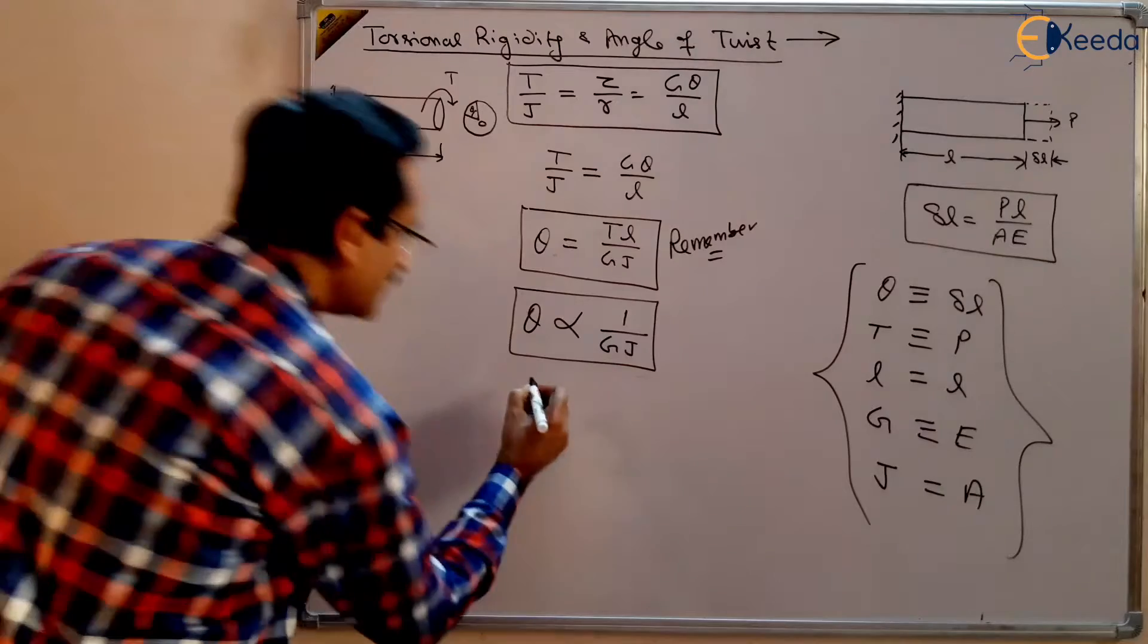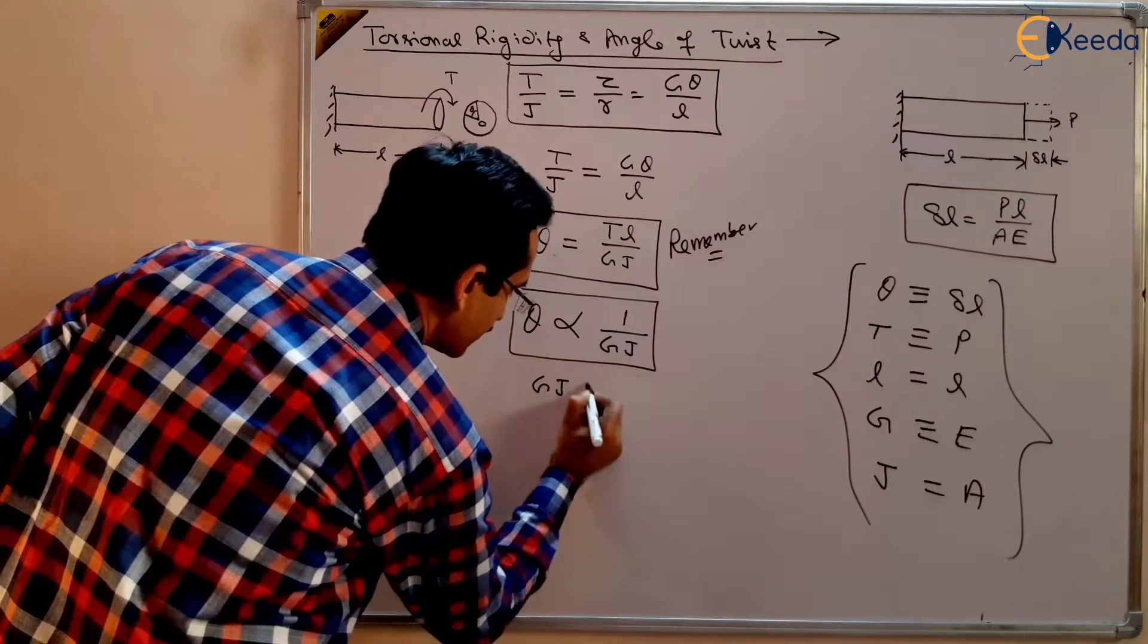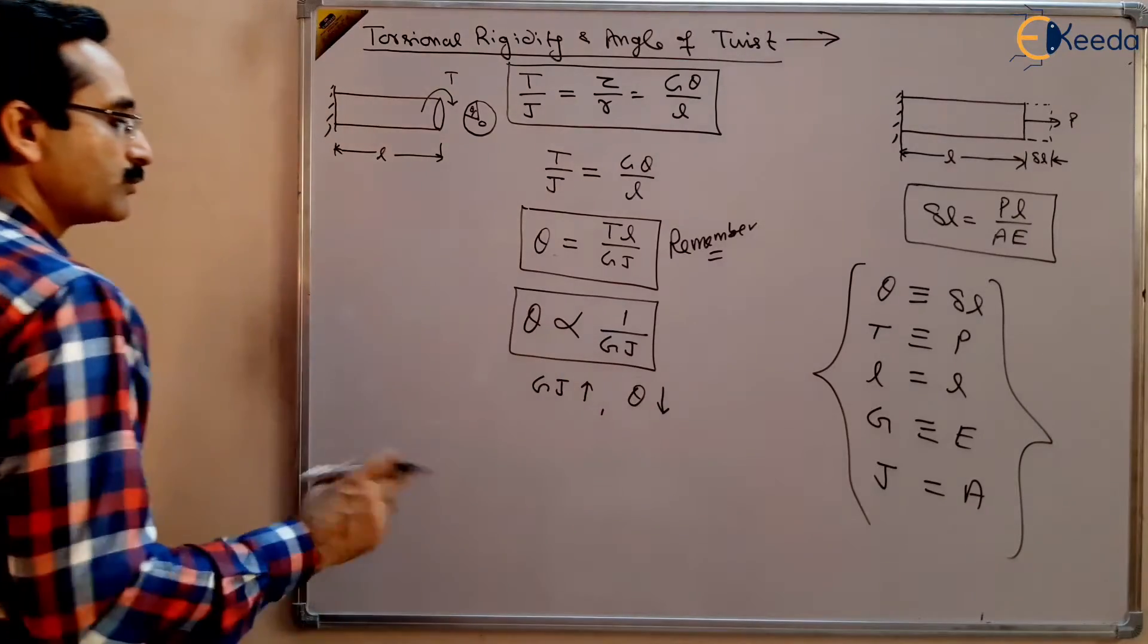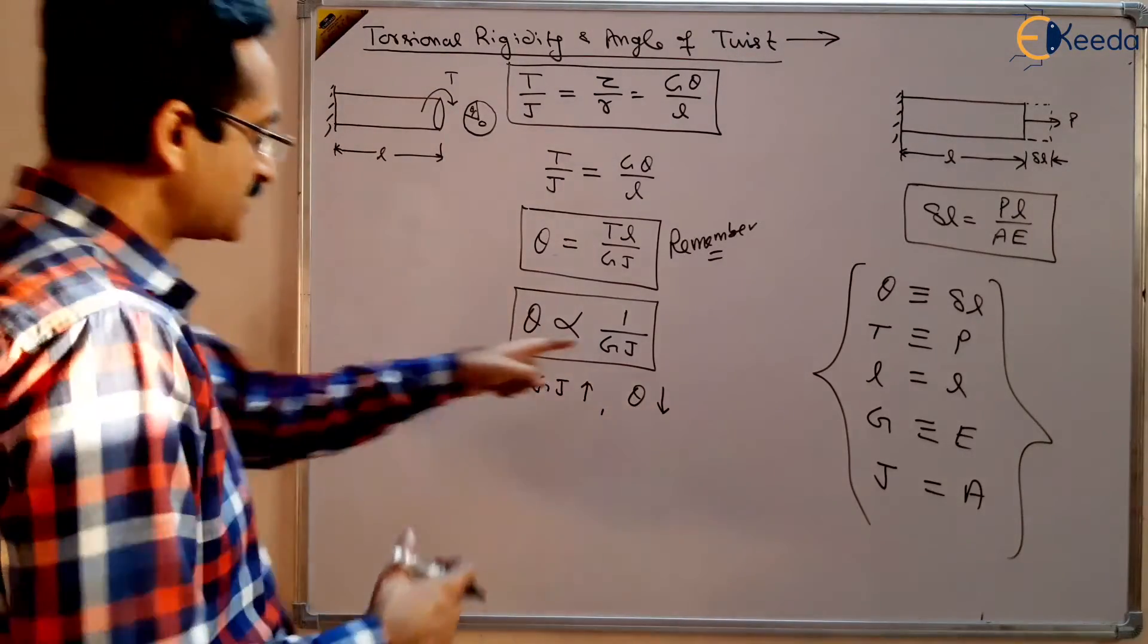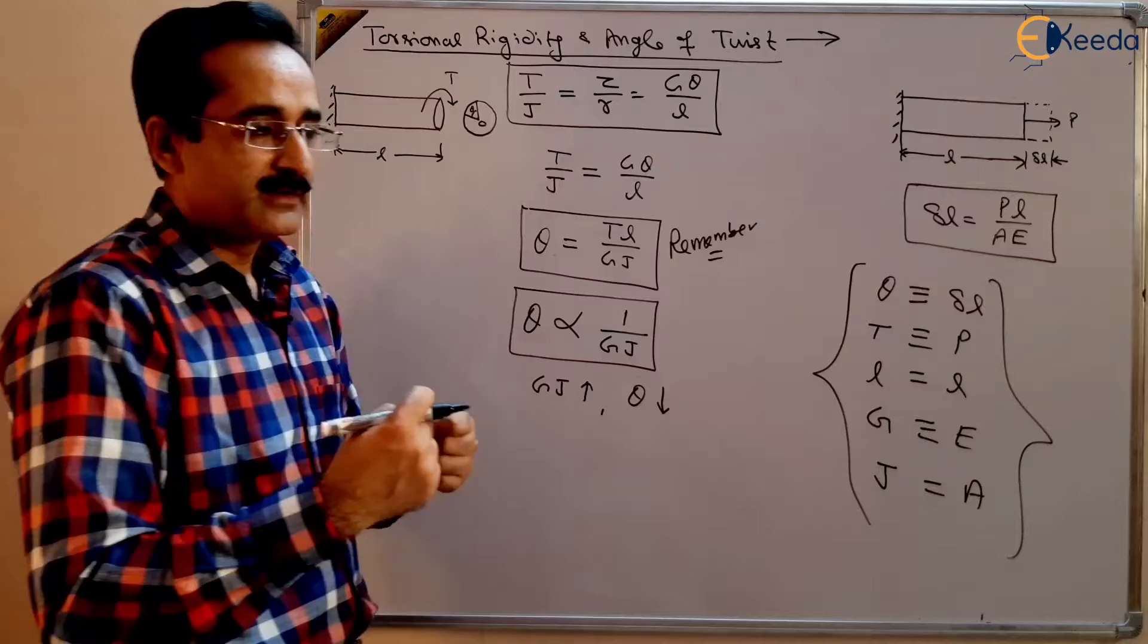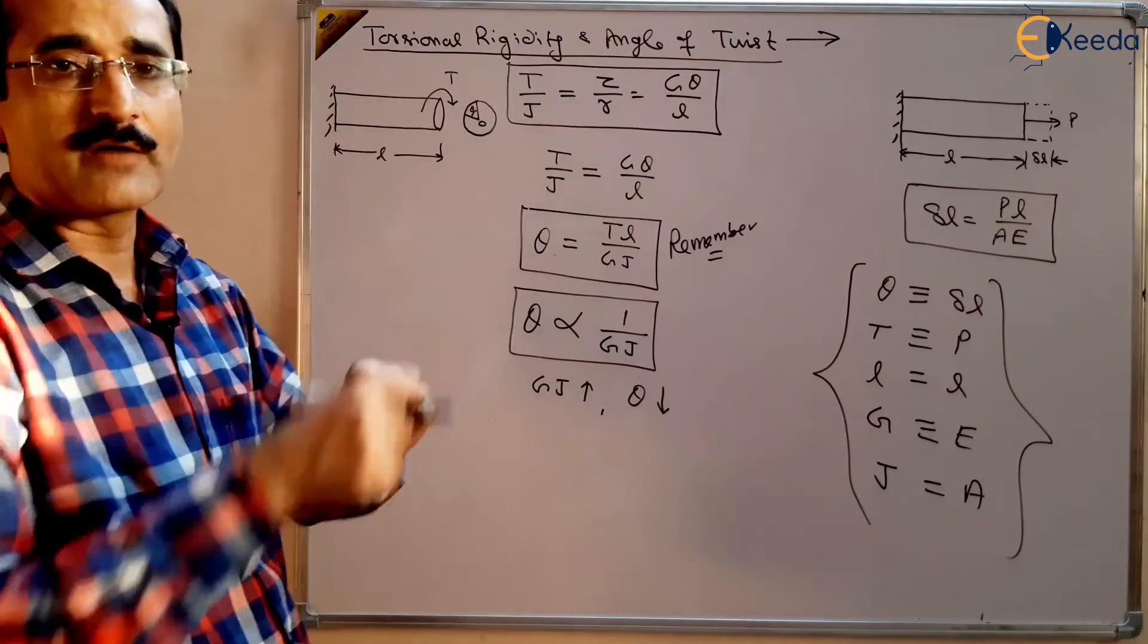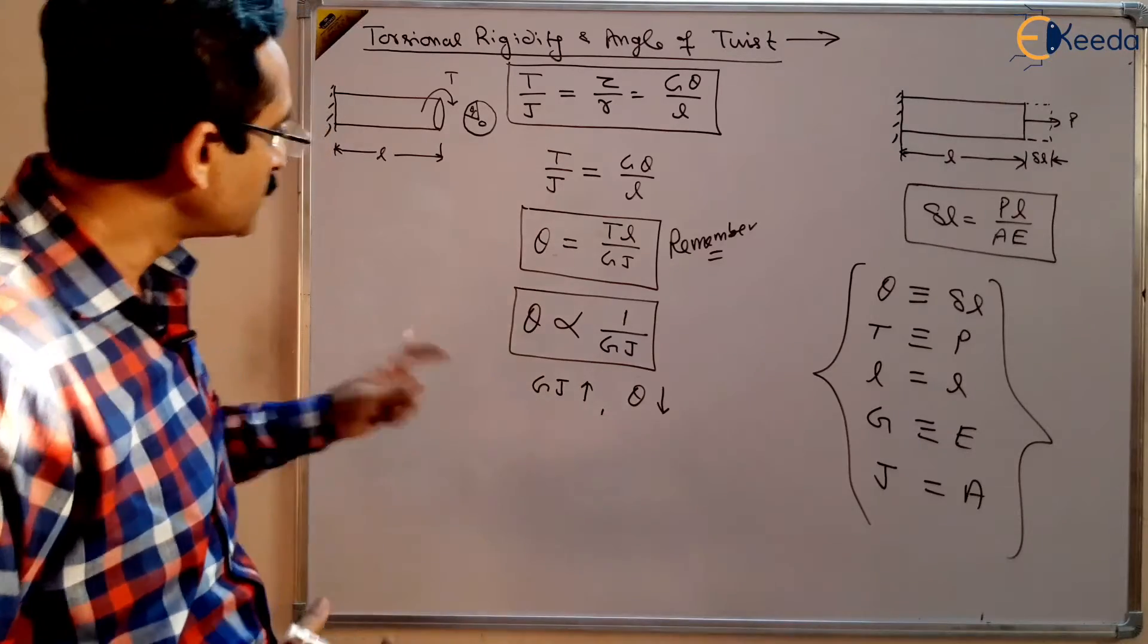You can see here, if GJ is higher, theta will be lower because it is inversely proportional to each other. So this GJ basically is not allowing the torque to twist the shaft to a large quantity.